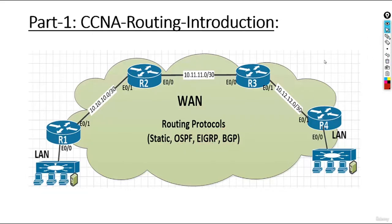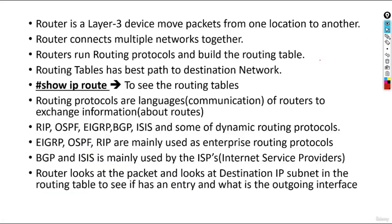In this journey we are going to learn more about the routing part of CCNA. A router is a Layer 3 device. Remember, a switch is a Layer 2 device — switches understand MAC addresses. On the other hand, routers understand IP addressing. Basically what a router is doing is moving packets from one location to another. Router connects multiple network segments together, so if you want to connect 10.10.10.0 to 10.11.11.0, the only way is by using a router.